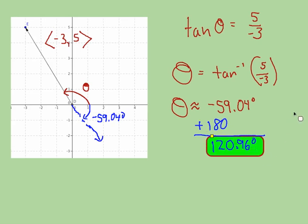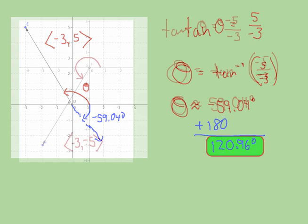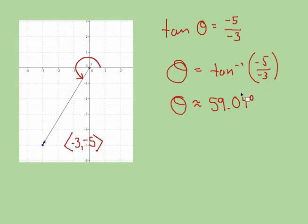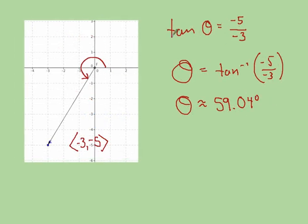What happens if we are in the third quadrant? Same thing, use the tangent function, y over x. Again, I'm getting 59.04 degrees,